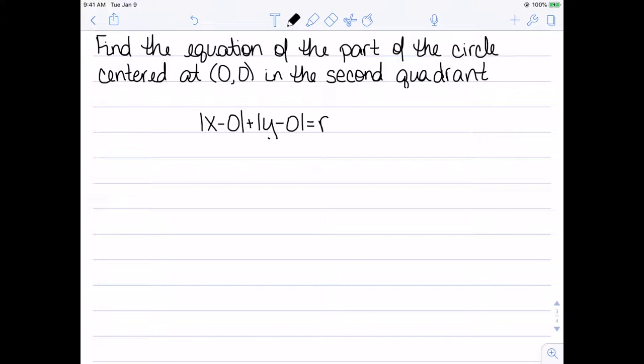Letting h and k be 0 and 0 gives me this equation here. So the equation of the circle centered at 0, 0 with radius r is the absolute value of x plus the absolute value of y equal to r.